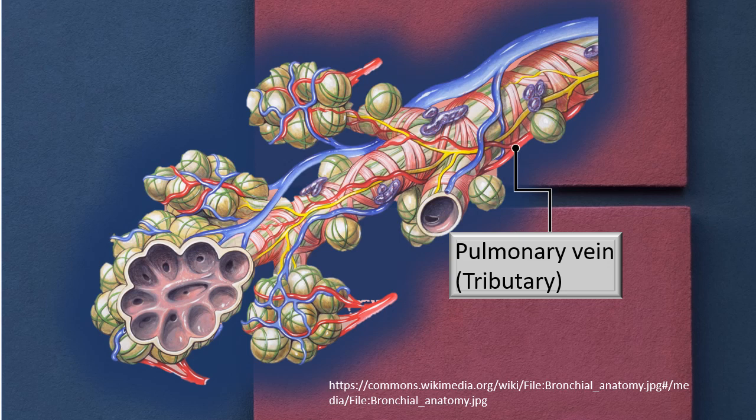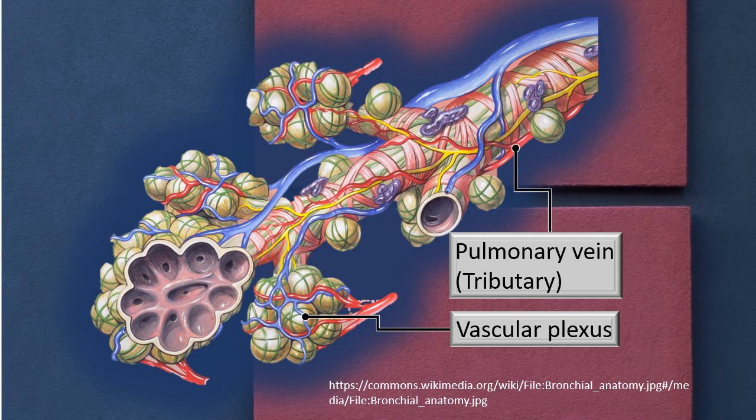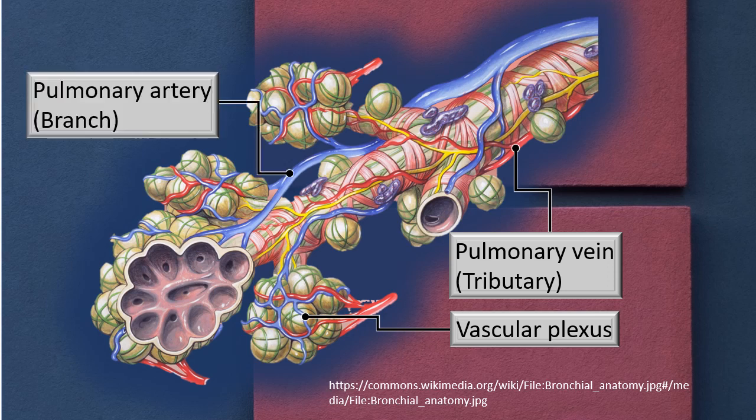When you look at the vascular architecture, it closely follows the bronchial tree. The red colored structure I have labeled is a tributary to the pulmonary vein. What is marked in blue is a branch of the pulmonary artery — mark my words, I have exchanged the color contrast, which is well known.